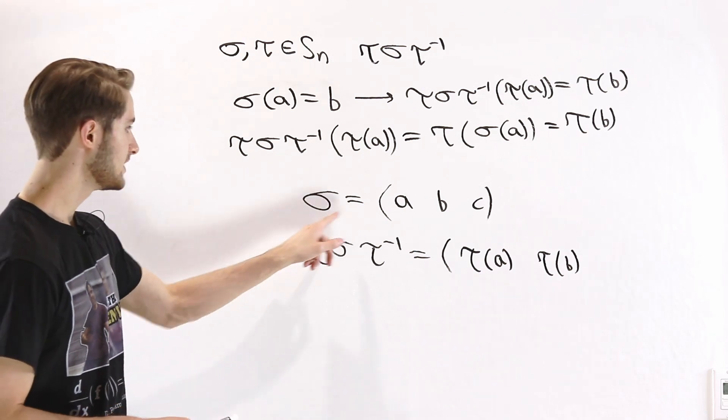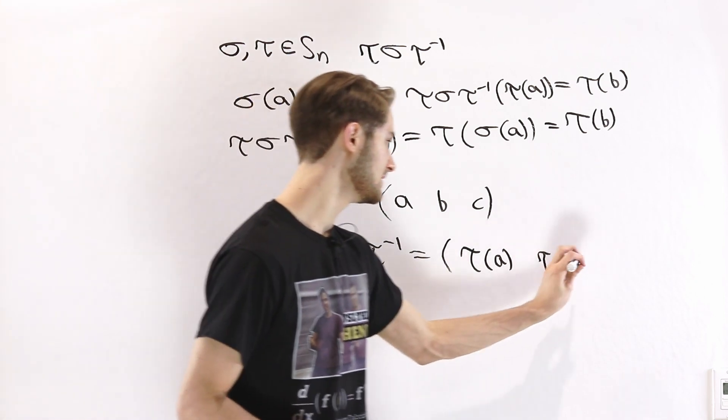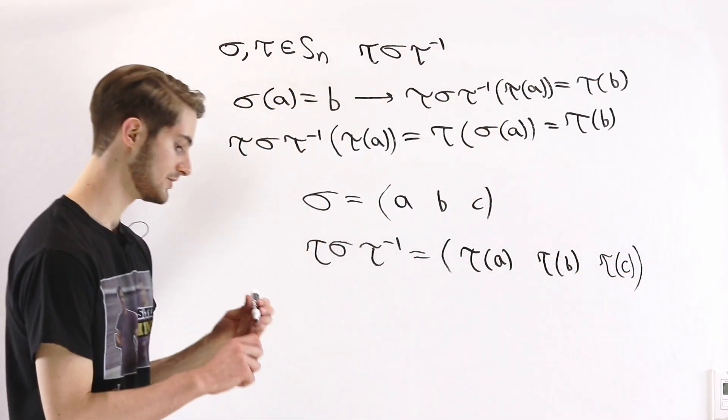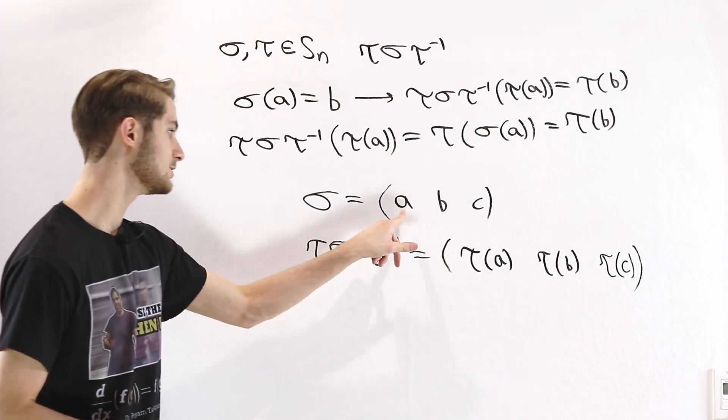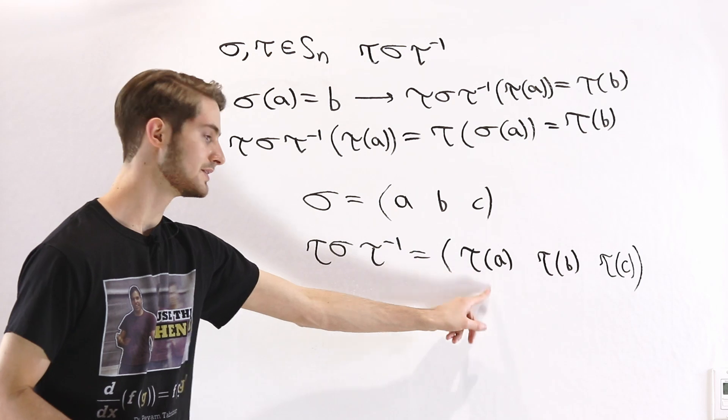Similarly, we see that sigma of B is equal to C. And therefore, this applied to tau of B is going to give us tau of C. And that finishes our cycle, because sigma of C equals A. Therefore, this is going to send tau of C to tau of A.